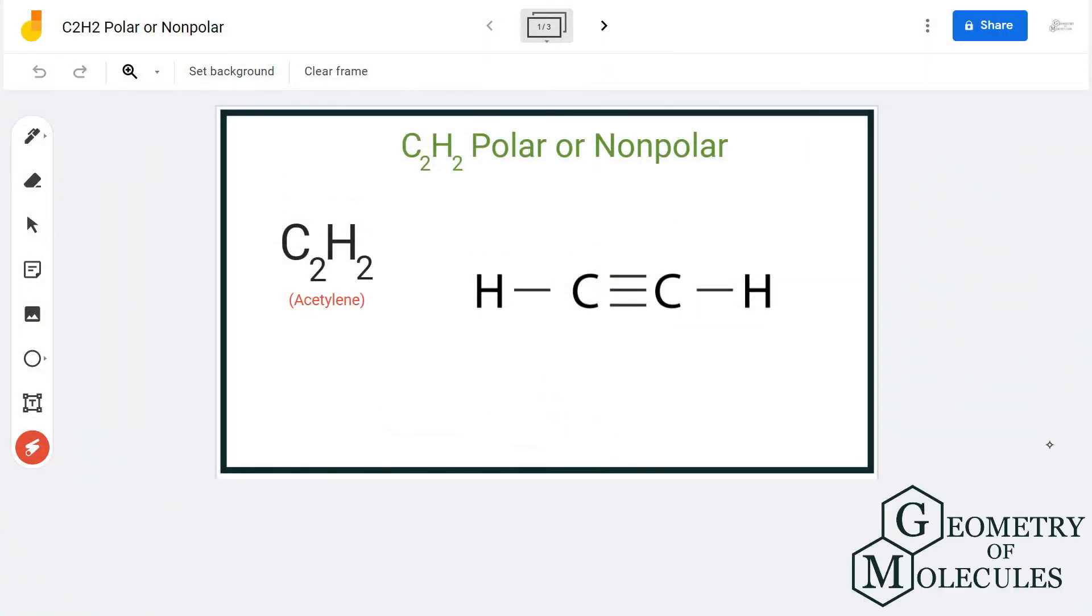Hi guys, in this video we are going to determine the polarity for C2H2 molecule. It's a chemical formula for ethane, and it is made up of two carbon atoms and two hydrogen atoms.